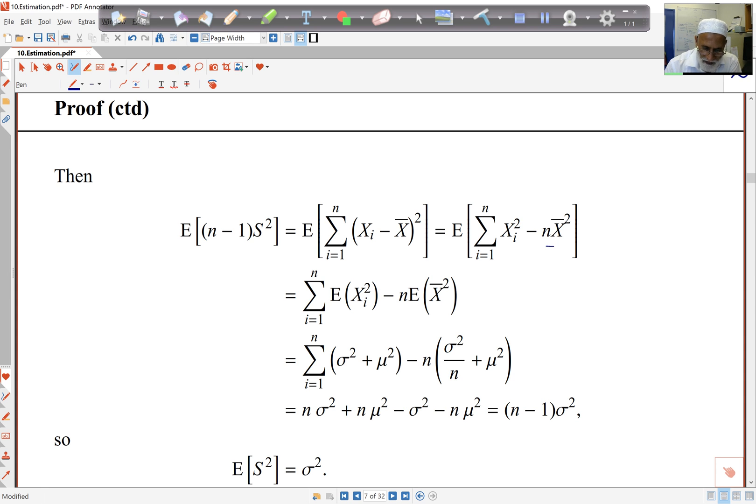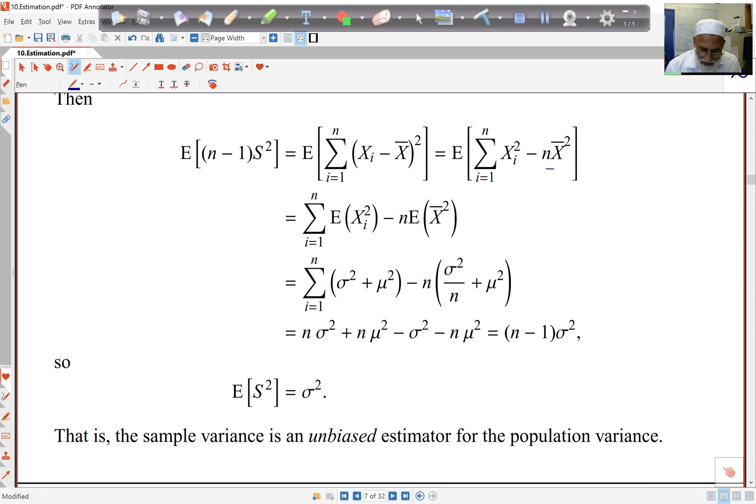If I just break up all the sum - I'm adding this quantity n times - I get n sigma squared plus n mu squared. The n's cancel off here, and I get minus sigma squared, minus n mu squared. So these cancel off.